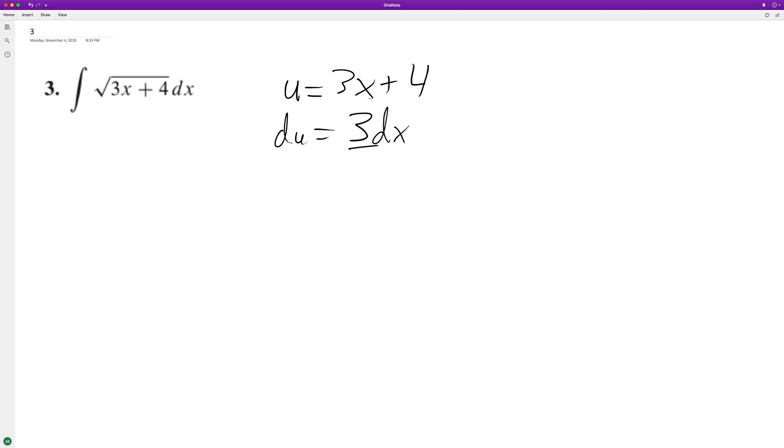So to get dx equal to du, we divide 3 by 3. So we end up with 1 3rd.